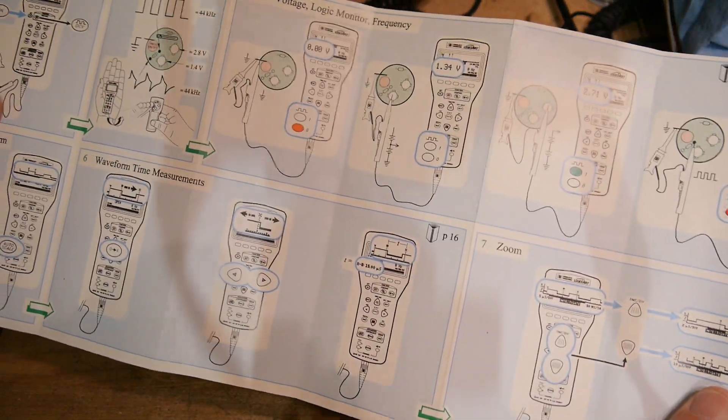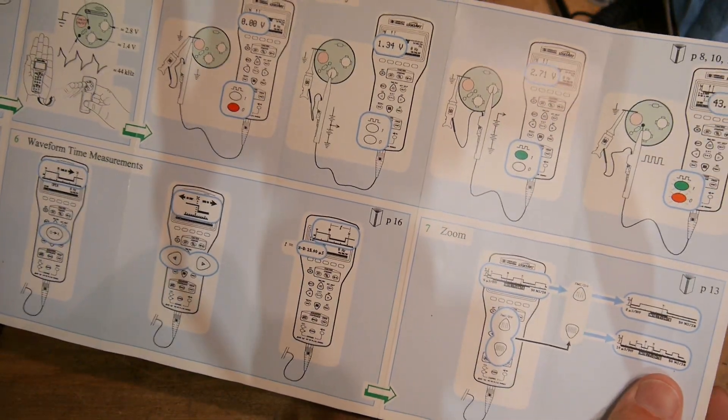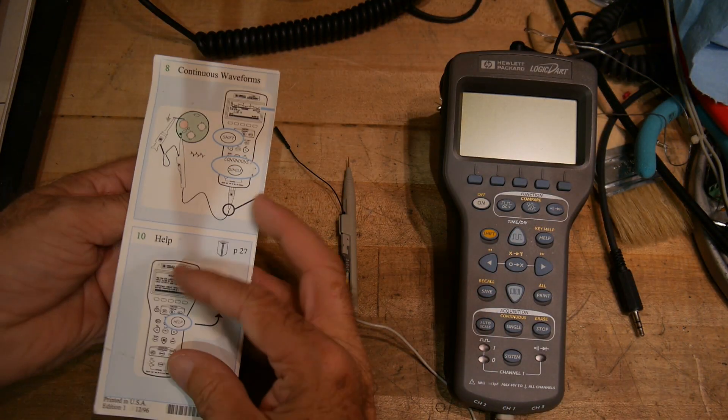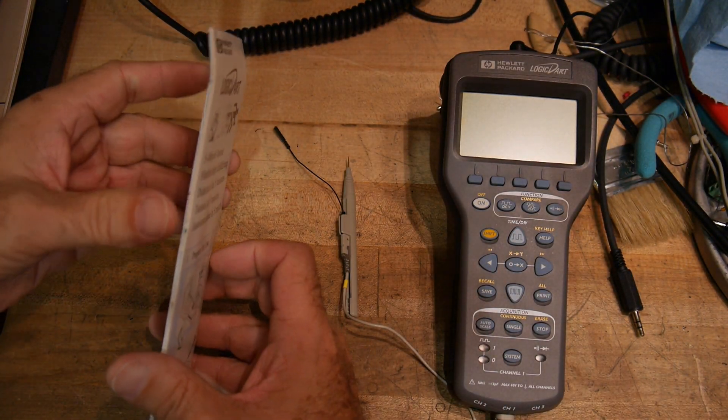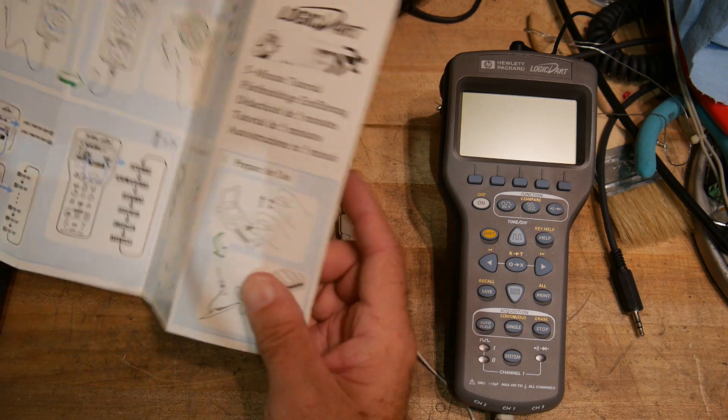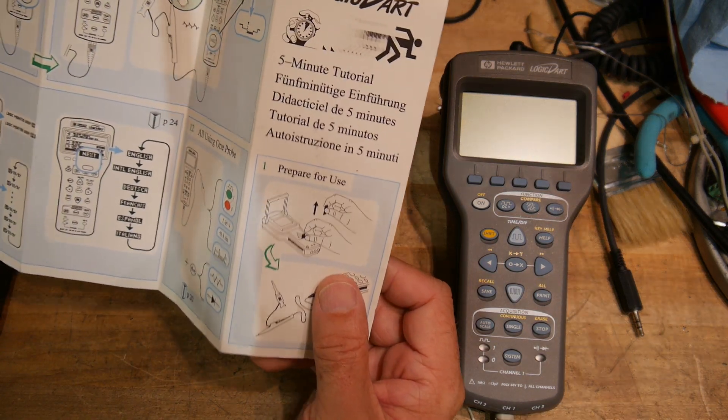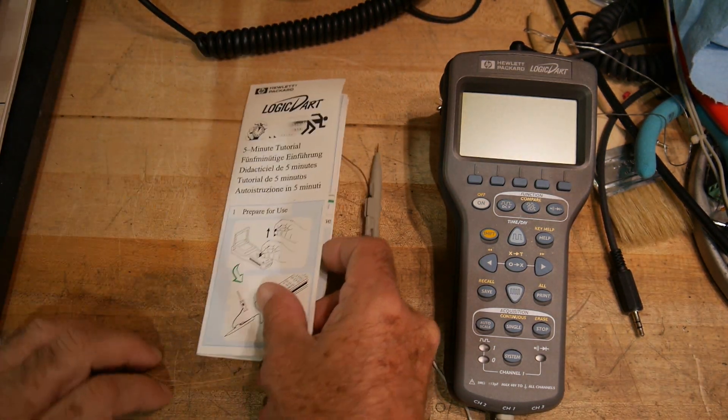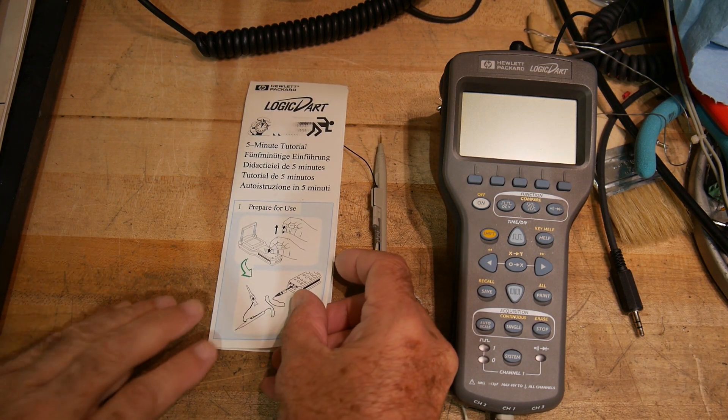They call it the five-minute tutorial for the Logic Dart. Nice little color thing here folds out. So let's see one two three four six seven eight ten. So it has twelve different things you have to do in five minutes. So let's do that.